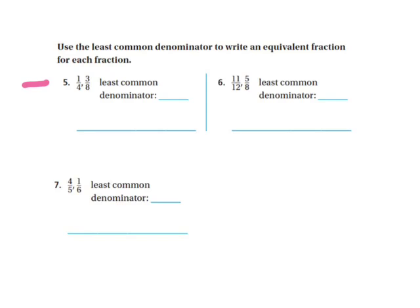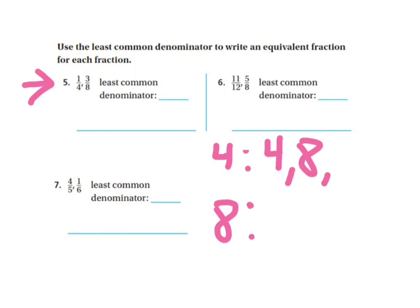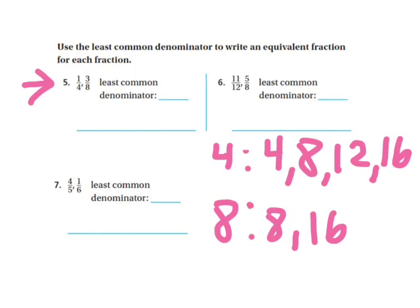For number five here, we have 1/4 and 3/8, and we want to find the least common denominator. What you can do is write down the two denominators and just write out all their multiples. For 4 we have 4, 8, 12, 16, and for 8 we have 8, 16, 24, and we could go on. But if you look at these two lists of numbers, you want to find any numbers that they have in common.